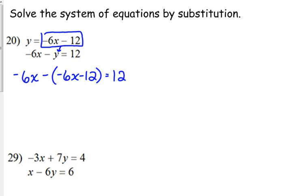Now my equation is no longer in two variables, it just has one single variable which is very easily solved. Distribute the negative so we get negative 6x plus 6x plus 12, and 12 equals 12.